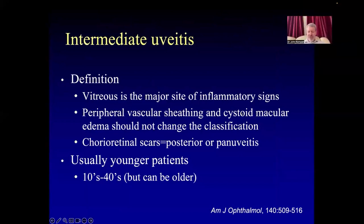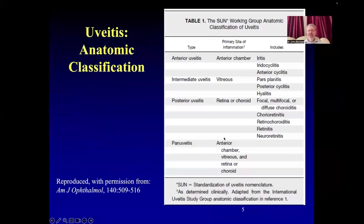Often peripheral vascular sheathing and macular edema or disc edema are associated, but these are considered by some to be complications and should not change the classification from intermediate to posterior or pan-uveitis. However, if you have chorioretinal scars, it should be posterior or pan-uveitis. Usually it affects younger patients, older children to younger adults, but it can be a full range of ages. The SUN terminology descriptors included are parsplanitis, posterior cyclitis, and hyalitis.